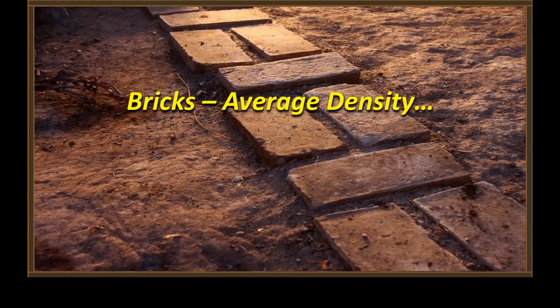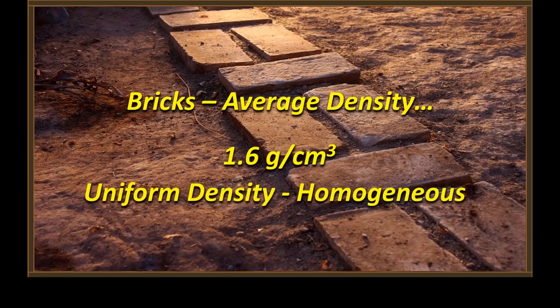A brick, on the other hand, has an average density of 1.6 grams per cubic centimeter, and it's of uniform density — it's homogeneous, Anthony. The left side of the brick is the same as the right side of the brick. The top of the brick is the same as the bottom of the brick. We can't remove any part of the brick and change its density. We could take some of the water away from the Earth and change its density, but we can't do that to a brick.